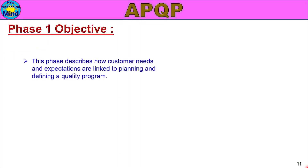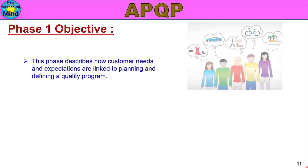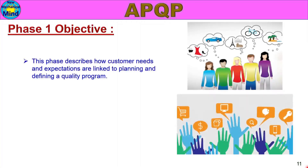In Phase 1, one objective is: this page describes how customer needs and expectations are linked to planning and defining a quality program. The main objective is customer needs and expectations, and program quality plan.